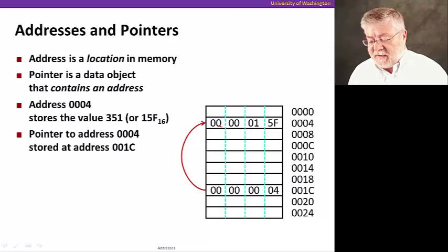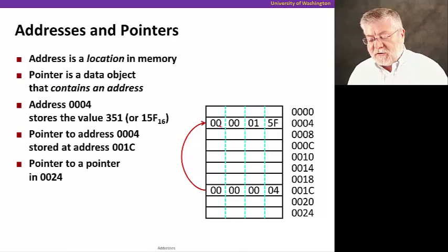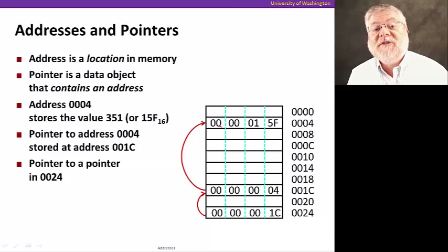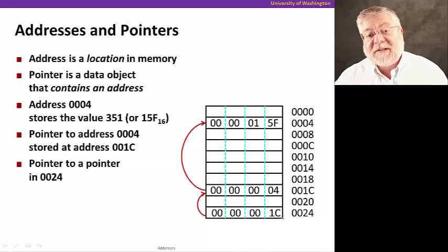Let's take a look at another example. I can have a pointer to that location at the address 0024, by placing the value 0000001C at the location 0024 in memory. Again, I am choosing to interpret this as an address, therefore it is a pointer to another memory location.